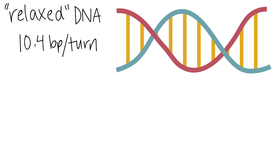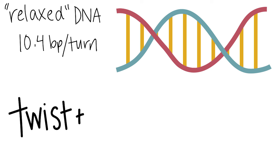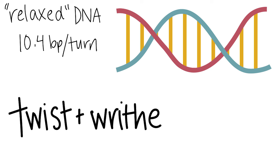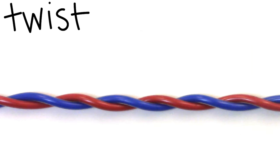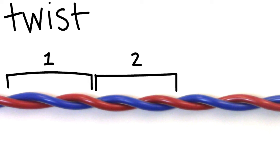One way to describe the structure of a DNA double helix is by a combination of its twist and writhe, the sum of which is called the linking number. The twist is described as the number of helical turns of one strand about the other, and can be measured by counting how many times one strand wraps completely around the other. For example, this relaxed, linear DNA has a twist of one, two, three.